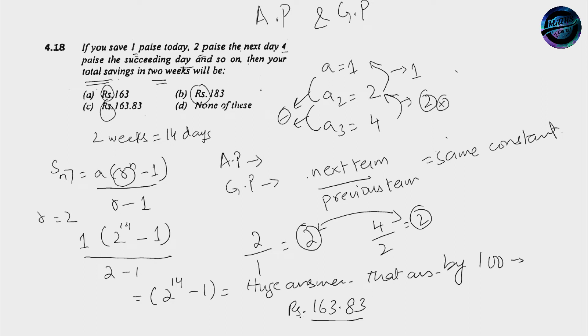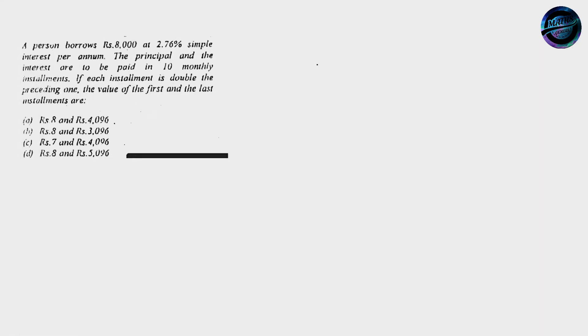I hope you guys have understood this. A very important question which is consisting of 2 parts. First is the simple interest thing and the other is a sum of series for 10 months. Now how we will be solving it? First of all, initially what happens to the students is that when they look at the question, they go and look for the solution.